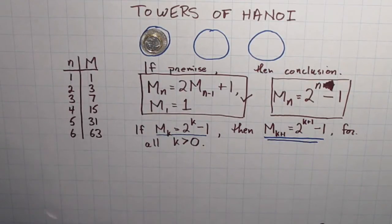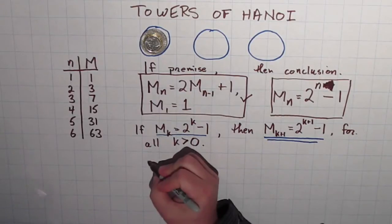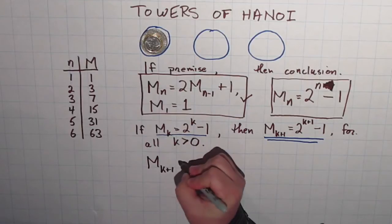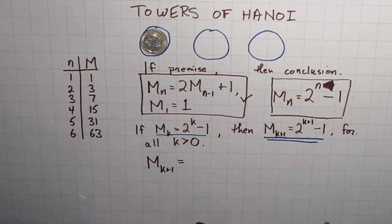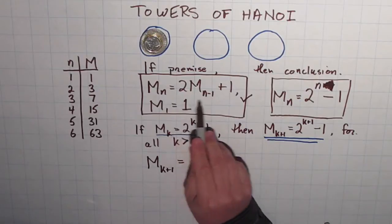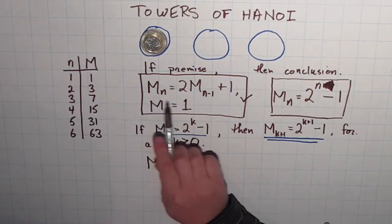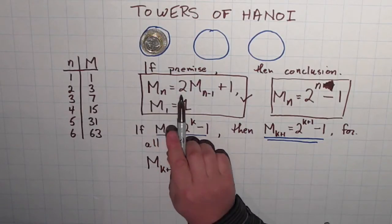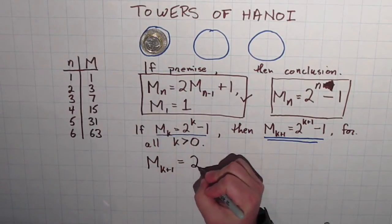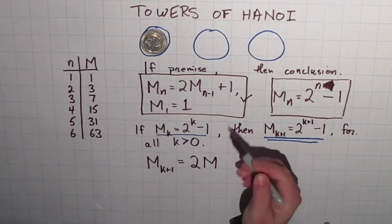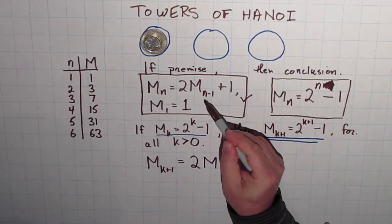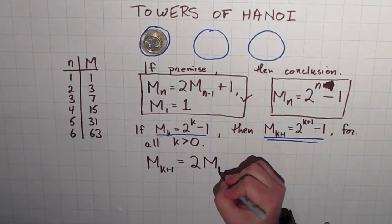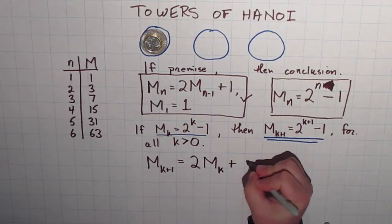And I also know this statement here for a fact because we proved that in the last video. And what I want to do is, with these two together, produce this statement. Actually, this proof is not a very long one. It's very short, so you don't have to bear with me for very long. I'm going to start with M_(k+1) equals. And I want to produce this statement over here on the right side. But what I got here is this statement. If I take this statement and replace the n with a k plus 1, I will get M_(k+1) equals 2 times M. And here it's n minus 1, but I'm replacing the n with a k plus 1, so it will be k plus 1 minus 1, which is just k, plus a 1.